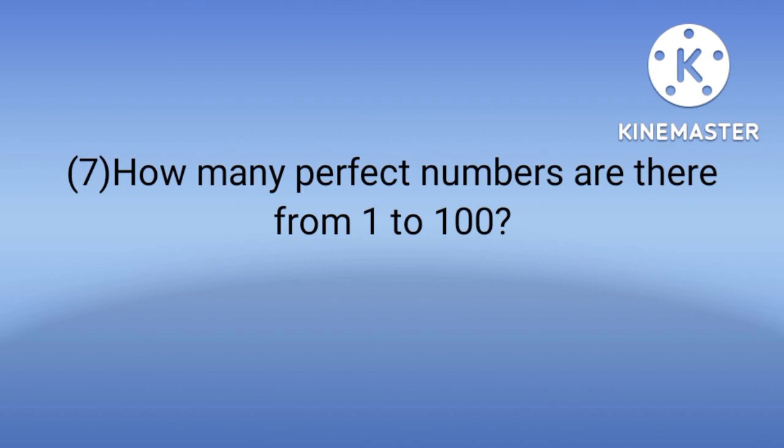Next question is: How many perfect numbers are there from 1 to 100? Options are 2, 3, 1, 4. The answer is A, 2 - the numbers 6 and 28. Both are perfect numbers from 1 to 100. Why are 6 and 28 perfect numbers? First let's see what is a perfect number. A number whose sum of factors equals twice the number itself is called a perfect number.